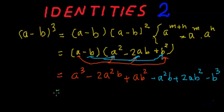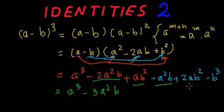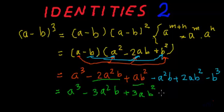Now let's solve it further and accumulate all the like terms. We have a cubed, then minus 2a squared b and minus a squared b combined give minus 3a squared b. Then plus ab squared and plus 2ab squared give plus 3ab squared, and then we have minus b cubed.